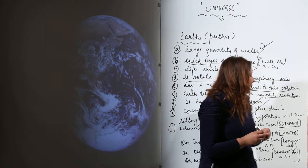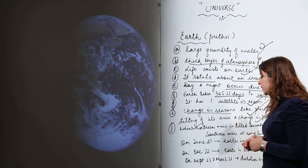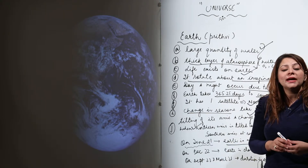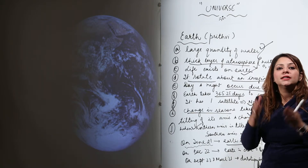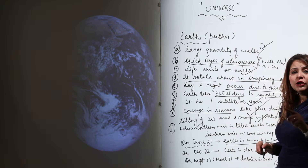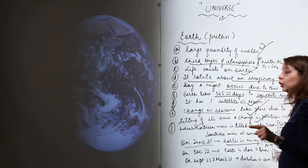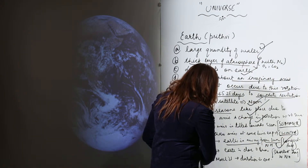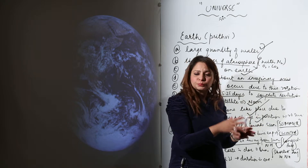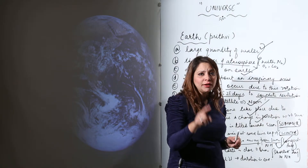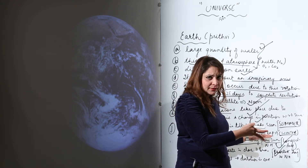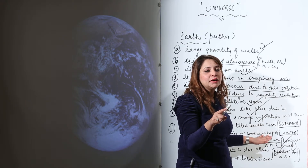On June 21, the northern hemisphere is at maximum distance from the sun, and because of this, June 21 is the longest day in the northern hemisphere. The northern hemisphere is very far from the sun on this date, which is why it experiences the longest day.